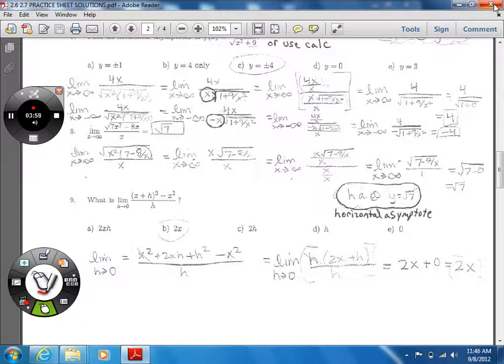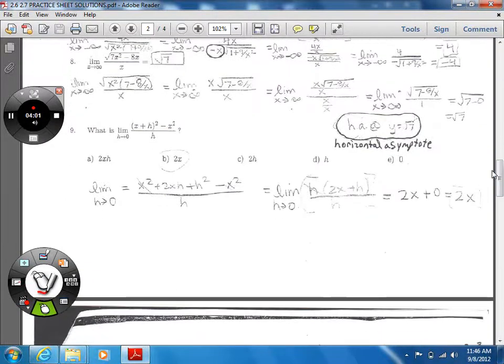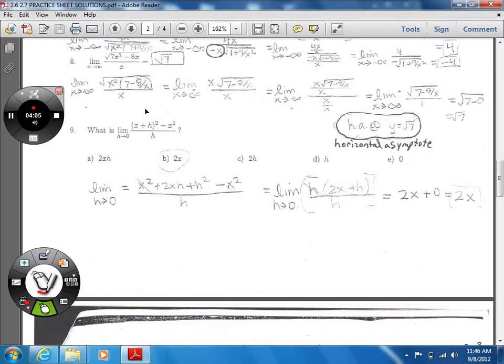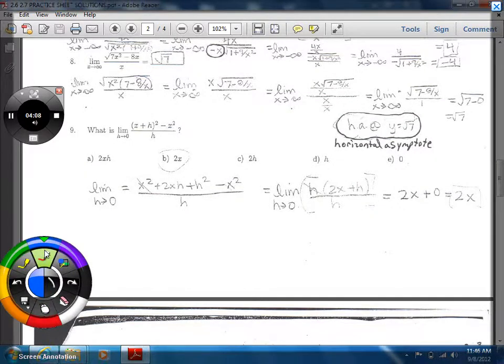Number nine, what you want to do there is just multiply it out. So just multiply this out, expand it. And if you multiply it out, you'll notice that the x squareds will cancel out, if you do it correctly. And then you can factor out an h. And when you factor out an h, that'll take care of the h on the bottom. And you'll have two x plus h. And then you could let h go to infinity, and then you get two x.